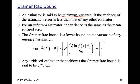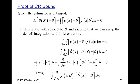The Cramér-Rao bound has one form involving the derivative of the log likelihood squared. We'll also look at another form that instead uses the second derivative. But let's prove the first form right now.